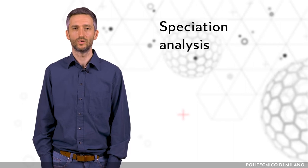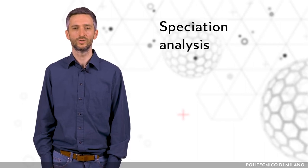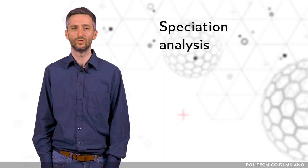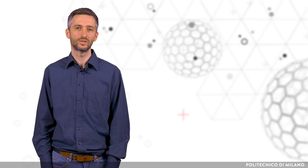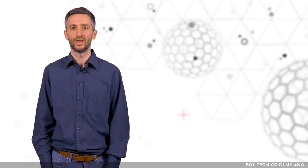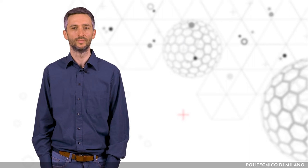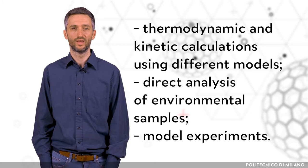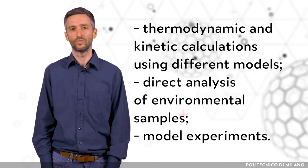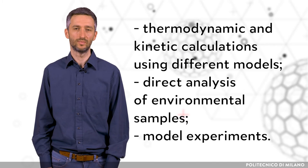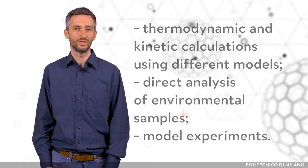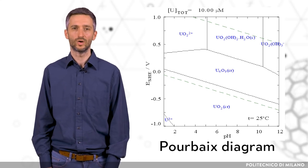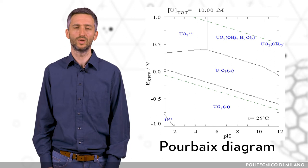Determining the chemical species of a radionuclide is called speciation analysis. Knowing the chemical speciation in specific environmental conditions is crucial in assessing the risk of radionuclides. The methods used in speciation analysis can be thermodynamic and kinetic calculations using different models, direct analysis of environmental samples, and model experiments. In this context, Pourbaix diagrams can be very useful — they map out possible stable phases of an aqueous electrochemical system.